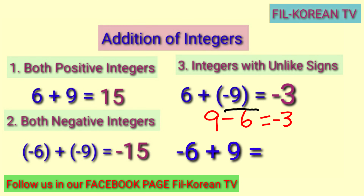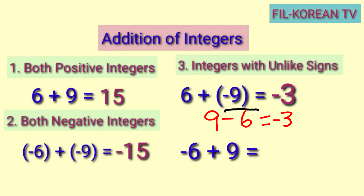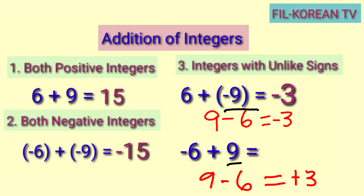How about if we add negative 6 plus positive 9? The signs of the addends are different, so the rule is to subtract. We will subtract 9 minus 6 equals 3. Then, to put the sign in the sum, we need to copy the sign of the number with a higher absolute value. Since 9 is higher than 6, we will copy the sign of 9, and it is positive. So, negative 6 plus positive 9 equals positive 3. We don't need to put the sign in writing the answer when it is positive.